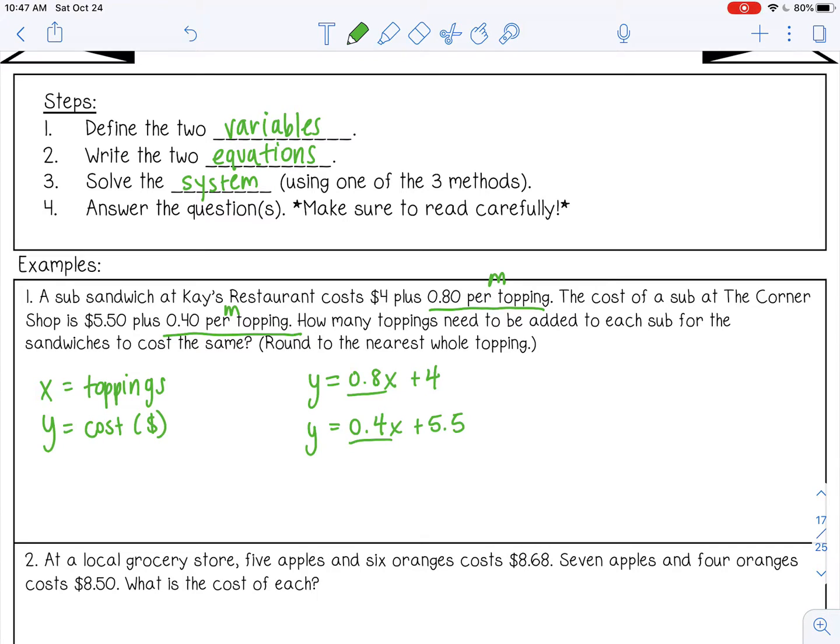So I know that y equals 0.8x plus 4, and it also equals 0.4x plus 5.5. So I'm going to use substitution here, and I'm going to substitute in this expression for y in my first equation. So here's my first equation. I'm going to change that y to what I have boxed in in pink and solve for x. So really what I've done is I've set the two equations equal to each other, and this is a form of substitution.